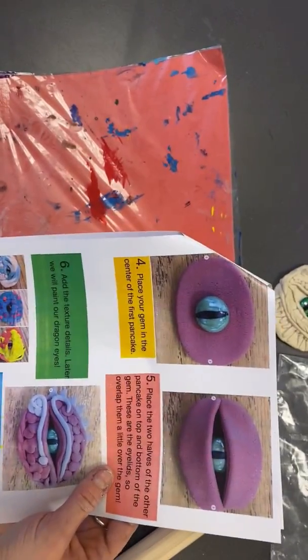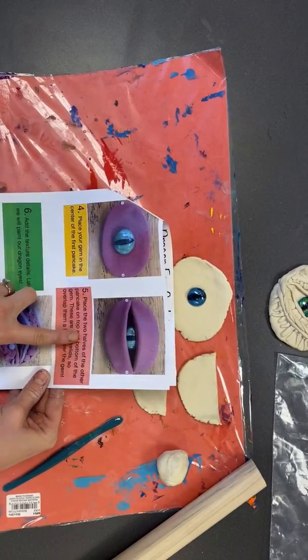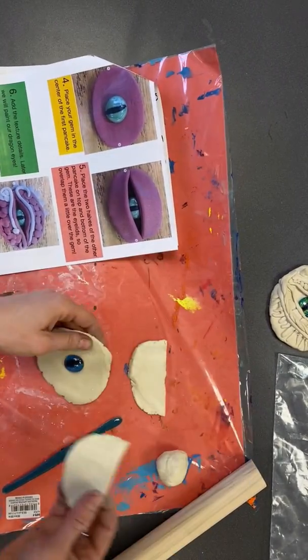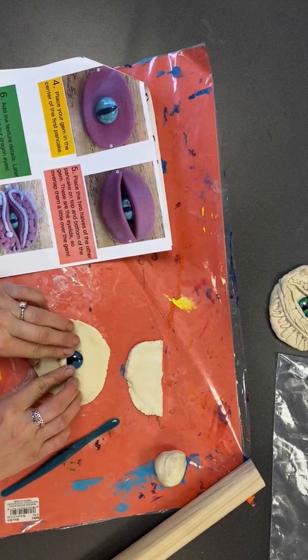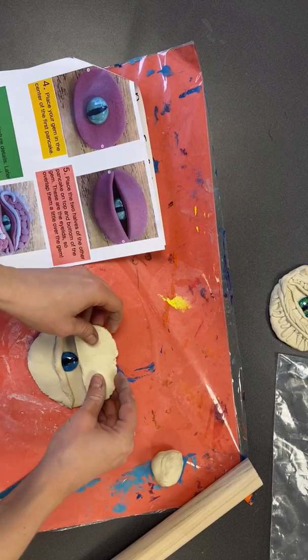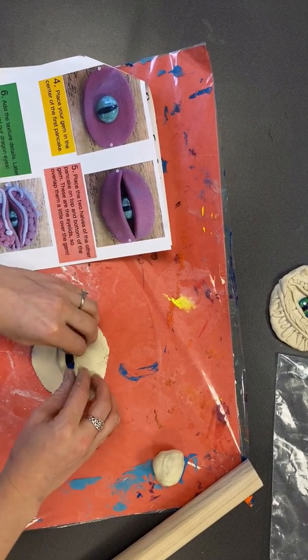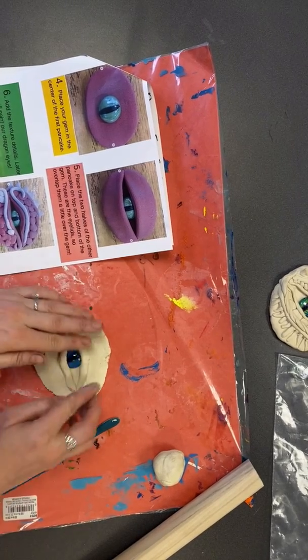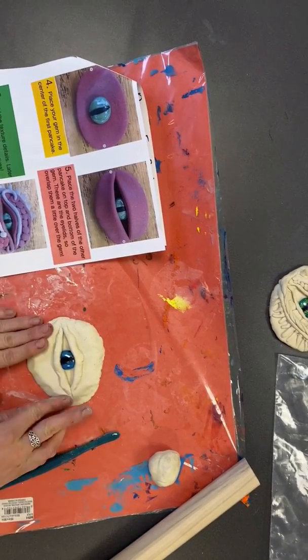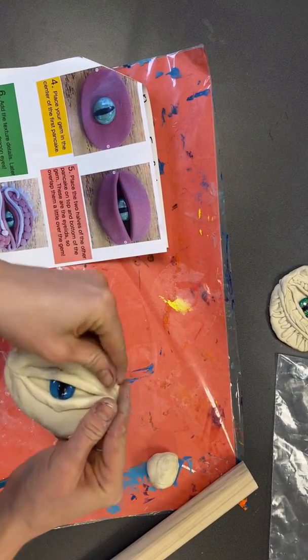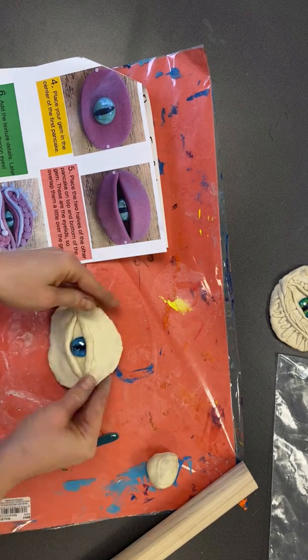Number four says place your gem in the center of your first big pancake. So my gem is ready. I'm going to place that in the center, press it down so it sticks. Then place the two halves of the other pancake on top and bottom of the gem. These are the eyelids. So overlap them over the gem a bit. So what I mean by overlap is your pancake halves here have to go over your eye a little bit because these are called eyelids. They cover the eye a bit, but we don't want to cover the eye all the way. So I'm just rolling this up a bit so it doesn't cover my whole eye. Now press your circles together. Press, press, press because we want them to stick together. You can even press the edges like this so they are stuck together. They're one piece now.